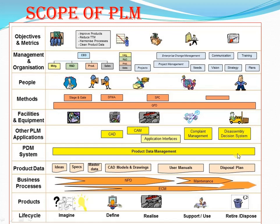The scope of the PLM system is shown in a grid. On the x-axis, the five phases of the life cycle are shown, and on the y-axis, different components are shown. The business process includes new product development, engineering change management, and portfolio management. Product data defines and describes the product — including customer requirements, CAD geometry, design specifications, manuals, reports, and disposal plans. The product data management system primarily manages all product data created and used throughout the life cycle. PLM applications help people develop and support products in design and analysis, NC programming in the CAM process, application interfaces, compliance management, and assembly and disassembly decision systems.